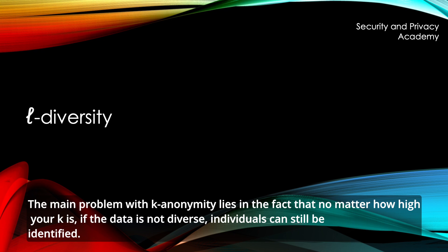The main problem with K-anonymity lies in the fact that no matter how high your K is, if the data is not diverse, individuals can still be identified.